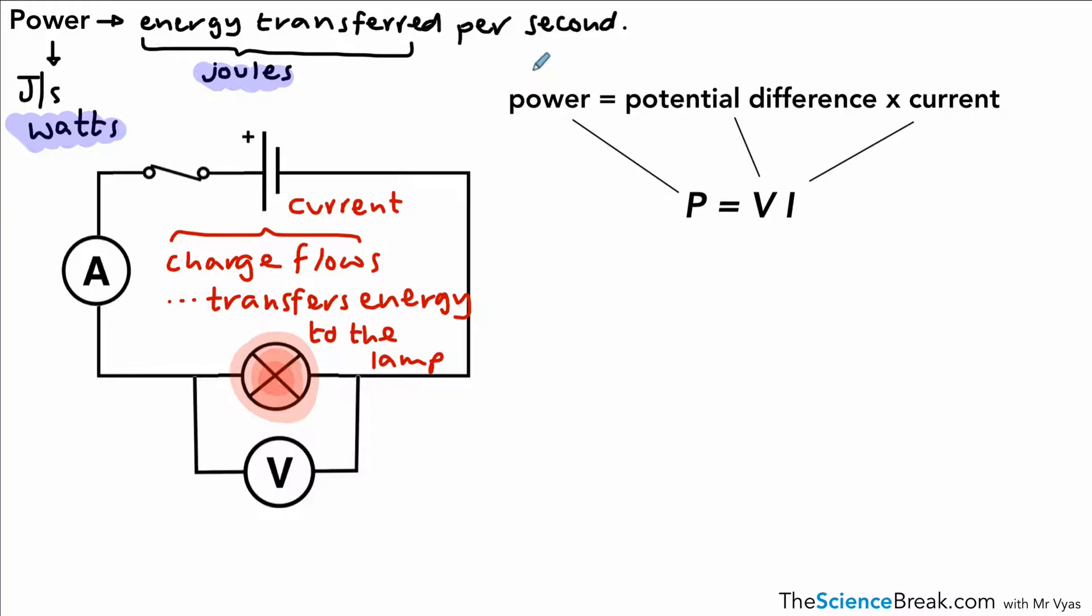V is potential difference and I is current. And the unit for each, as we've mentioned already, for power is watts. For potential difference, it's volts. And for current, it's amps. And you should know the abbreviation for those. That's W for watts, V for volts and A for amps.